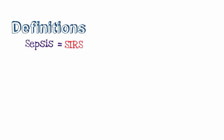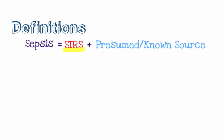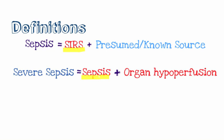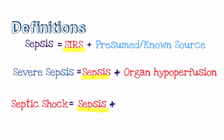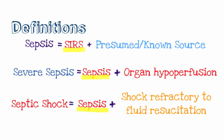Let's talk about our definitions. Sepsis is when you meet the SIRS criteria plus a presumed known source — such as the patient having dysuria or pain with urination, you could think it's a UTI, and if they're meeting the SIRS criteria, you would call that sepsis. Severe sepsis is a sepsis picture but they also have organ hypoperfusion — so decreased kidney function, elevated creatinine, or trouble breathing. Septic shock is sepsis where the shock is refractory to fluids: you're giving tons of fluid boluses, their blood pressure is not coming up, and they meet sepsis criteria.